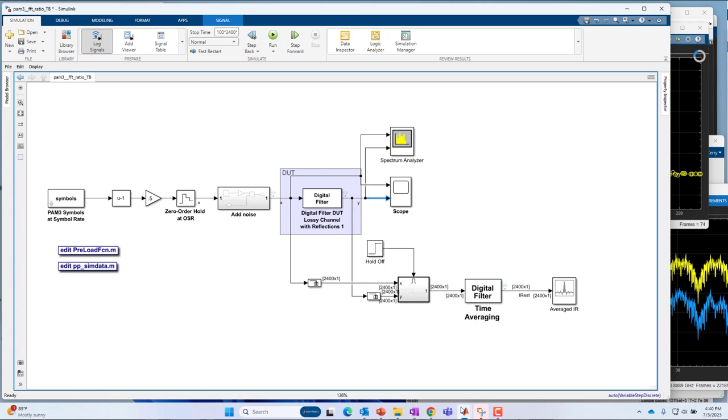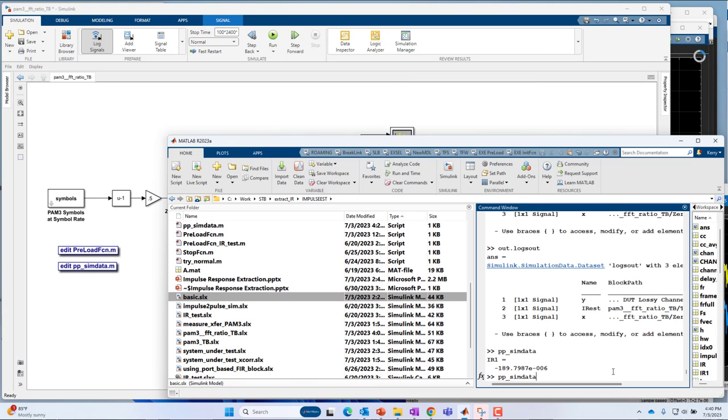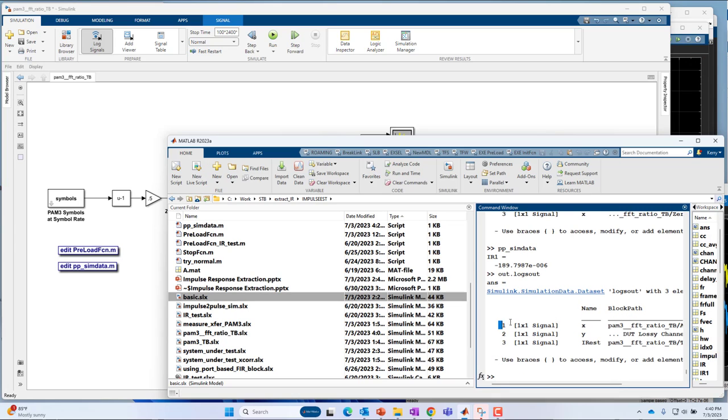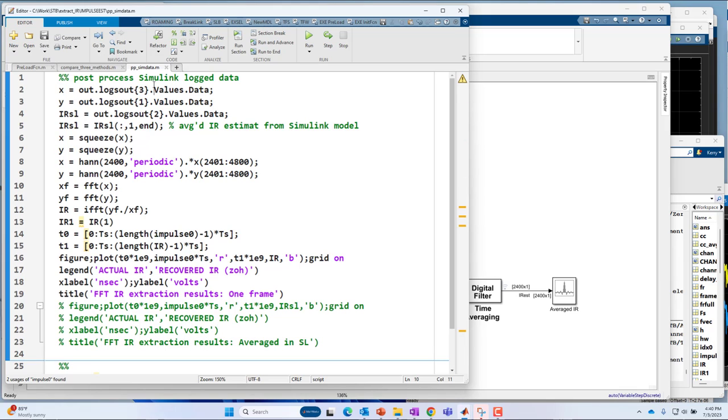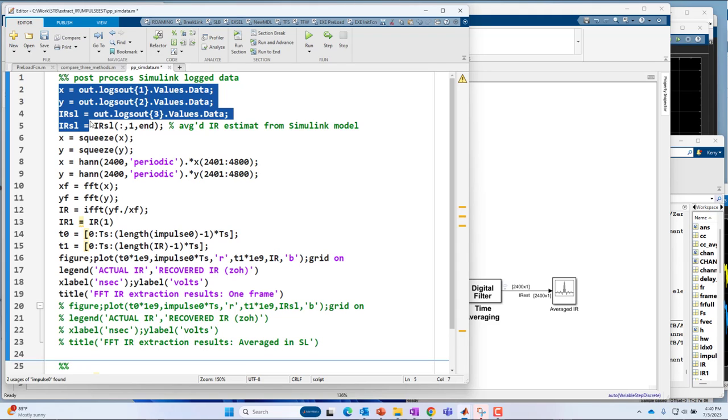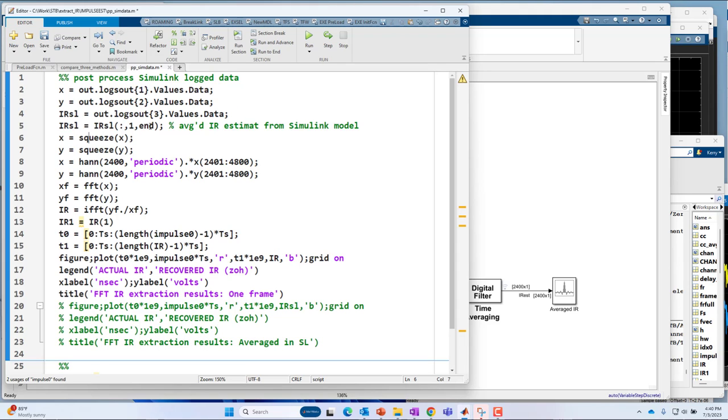But again, I've logged the data to the MATLAB workspace. And so we can see how it does. We've logged it as X and Y. So now if I go over to MATLAB, we'll see out.logsout. The input is one. The output is two. And the impulse response estimate is three in Simulink. So I'll go to my script, my post-write script. The input is one. The output is two. And the impulse response estimate is three. And the data from the Simulink model was logged to this out data structure, where you just pull off by index the particular elements from the model that you want. So I wanted the input, the output, and the impulse response estimate from Simulink. So I pulled out that data.